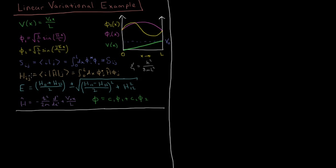The things that we need are our overlap matrix, the S matrix, which has elements Sij equal to the integral of phi star i times phi j over the entire range. We know that these two basis functions, being eigenfunctions of the particle in a box Hamiltonian, are orthonormal — normalized from their normalization coefficients and orthogonal to each other. So the S matrix is just an identity matrix: 1 if i equals j, and 0 if i does not equal j.